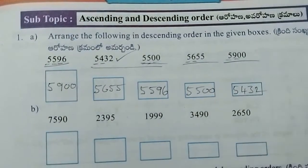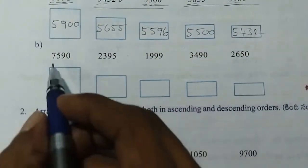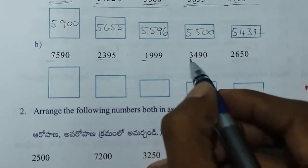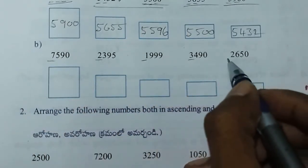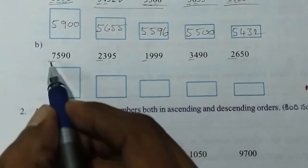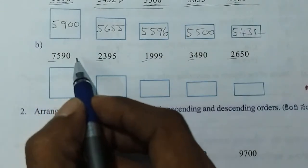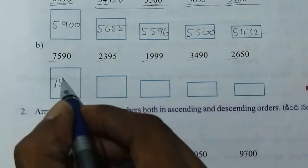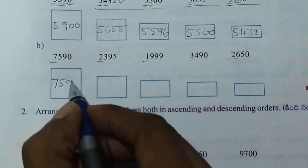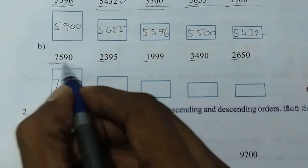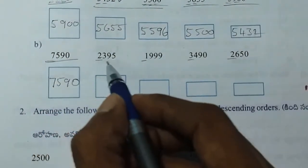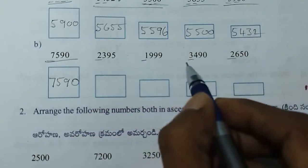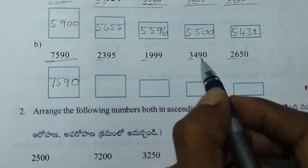Next, cut off only. Here we have 1000s numbers: 7, 2, 1, 3, 2. The biggest is 7, so the first number is 7,590. Next, the big number among 2, 1, 3, 2 is 3, so the next number is 3,490.